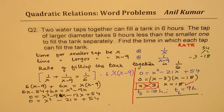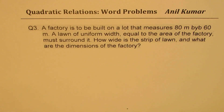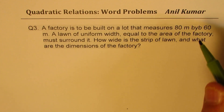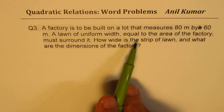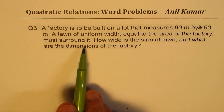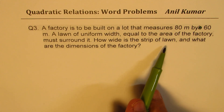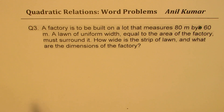That is the solution. Any question relating to rate — work done, painting, mowing, or taps — should be solved in this fashion: find the time taken, compute the rate as 1 over the time taken, form the equation by adding rates, and solve. Now let's take question number three: A factory is to be built on a lot that measures 80 meters by 60 meters. A lawn of uniform width equal to the area of the factory must surround it. How wide is the strip of the lawn and what are the dimensions of the factory?